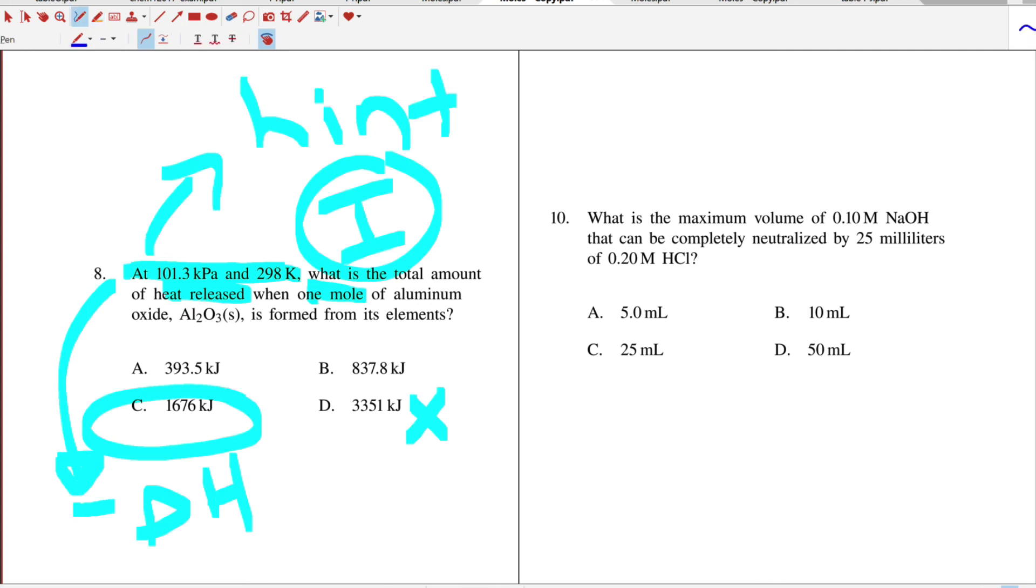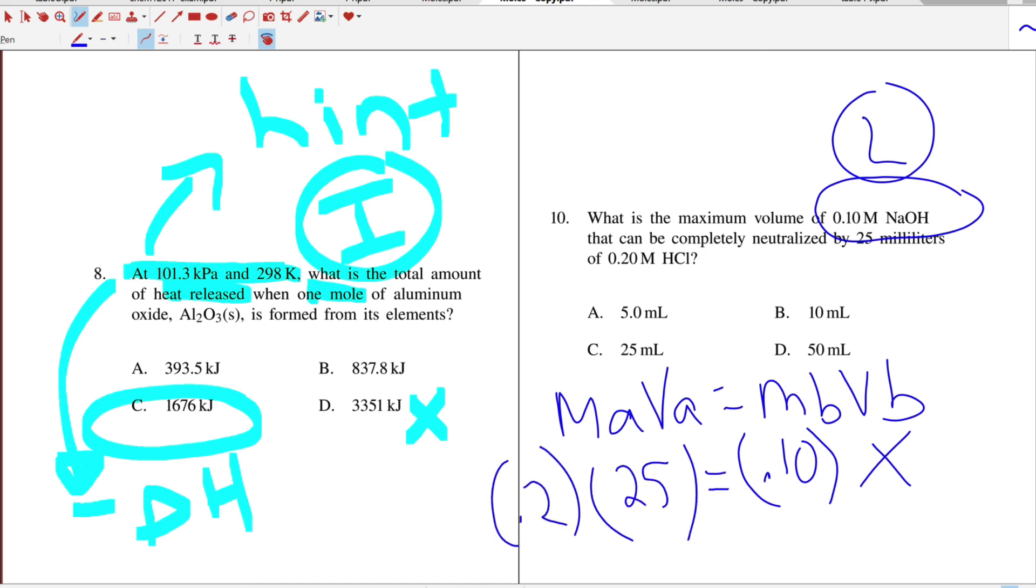And then this question over here is not really a mole question. It's the MaVa equals MbVb question. And you have 0.10 molarity of the base, and I know it's a base because it's a metal and an OH, and it's listed on Table L. And it says can be neutralized by 25 mLs, that's the volume, 'of' means multiply, 0.2 molar acid. So really to solve here, it's just molarity of acid times volume of the acid equals molarity base times volume of the base. So in the calculator, you're just going to do 0.2 times 25 and then divide that by 10.